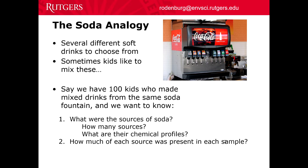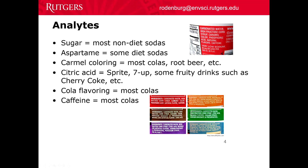Let's say you've got a bunch of kids at a party and they're all doing this. And let's say you want to know: what are the sources of soda? What types of sodas went into making up these drinks? How many of them were there? What are their chemical profiles? To figure this out, you might measure some of the things in these drinks that you know are in sodas — sugar, artificial sweetener, aspartame, caramel coloring, citric acid, cola flavoring, caffeine. You would have a list of things that are going to be useful in this endeavor, and you would go measure them.